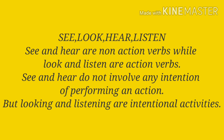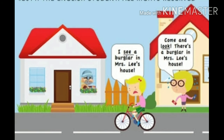Let's understand the difference between 'see' and 'look.' For example: 'I see a burglar in Mrs. Lee's house' — here the child is simply seeing, not performing any action. But 'Come and look, there's a burglar in Mrs. Lee's house' — here the child is performing an action by actively looking at the burglar.